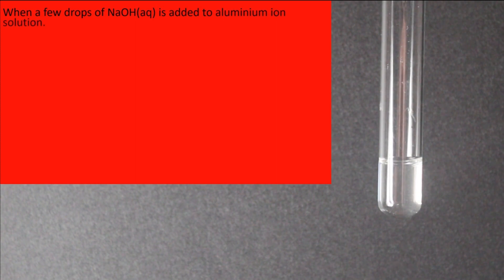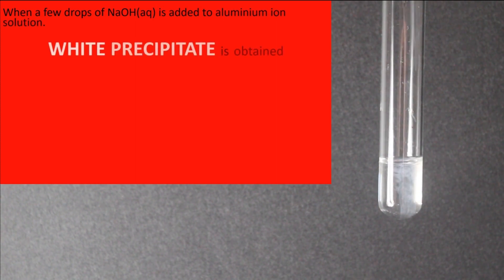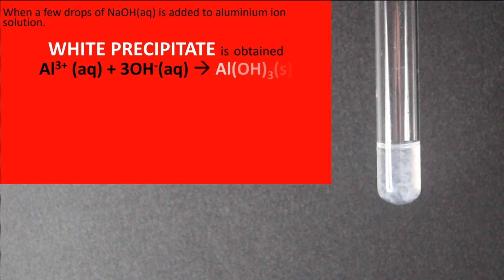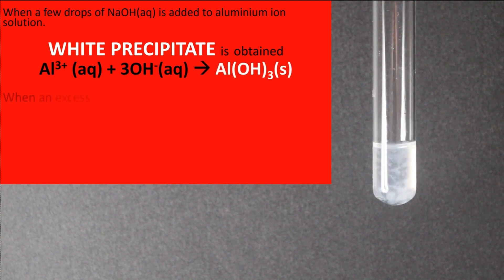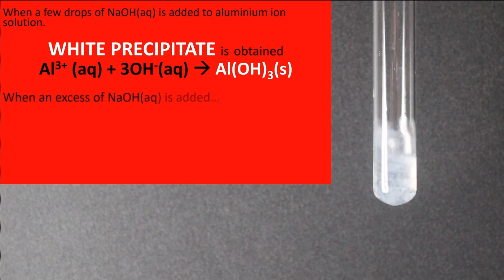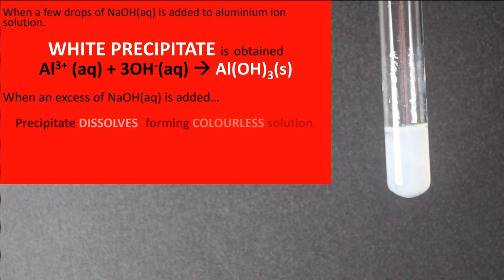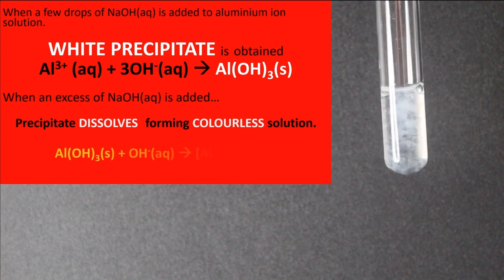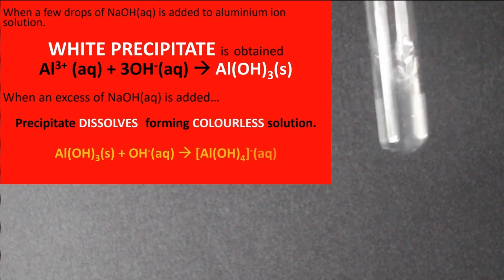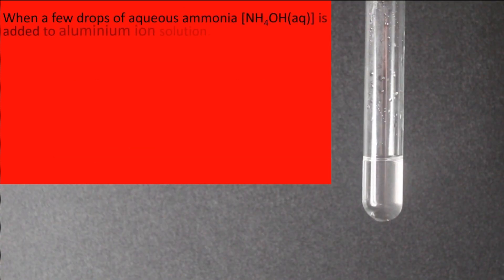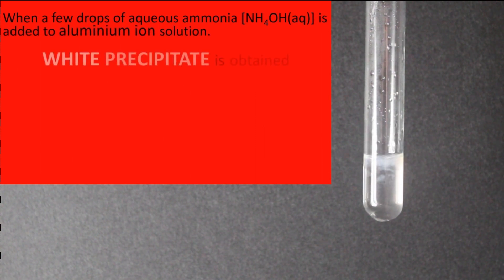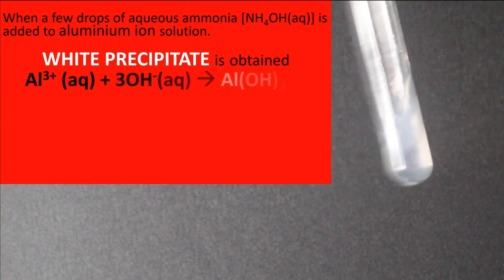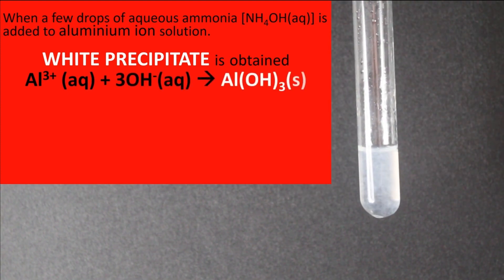Aluminium ions give a white precipitate with aqueous sodium hydroxide, and this precipitate is soluble in excess sodium hydroxide. Aluminium ions also give a white precipitate with aqueous ammonia, and this precipitate is insoluble in excess aqueous ammonia.